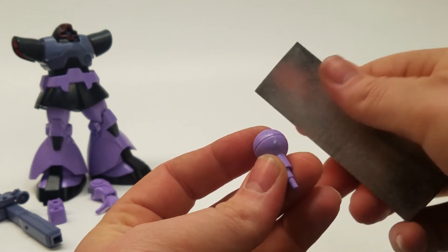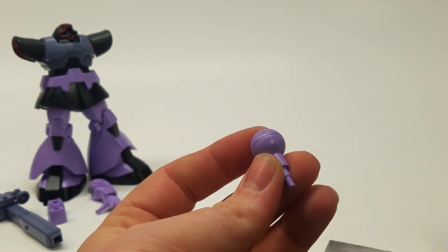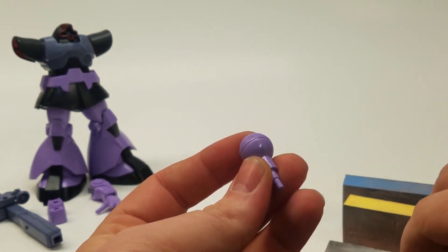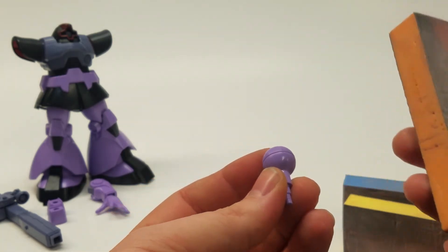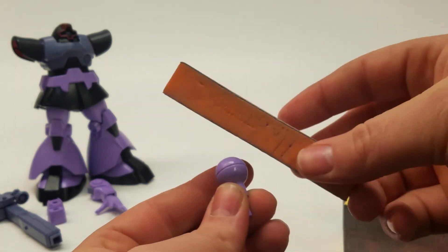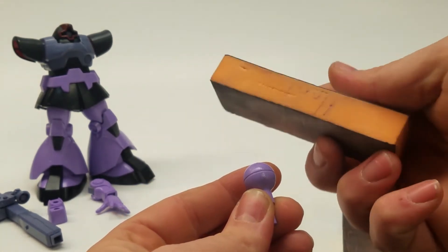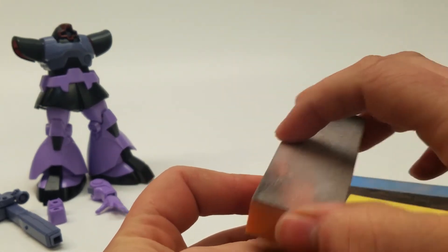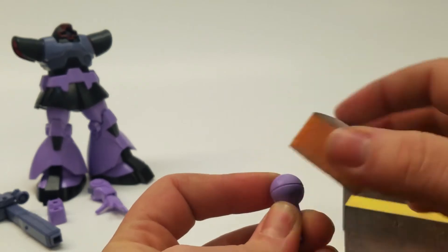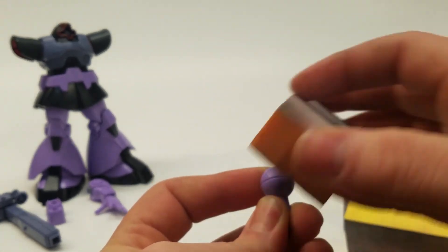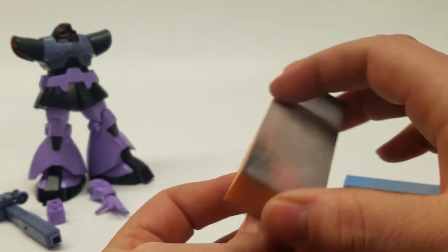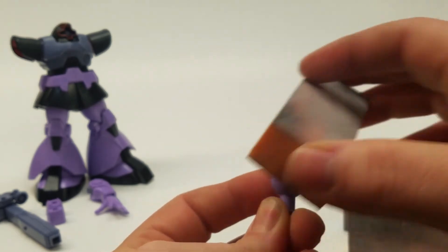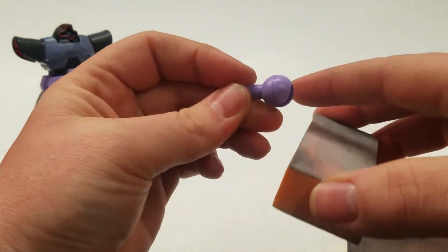These things are super cheap - just a couple of bucks at your local hobby shop or you can order them online. Just soft foam sanding blocks. You're just going to sand away, keeping the contour of the part, just to not make a flat spot on there.